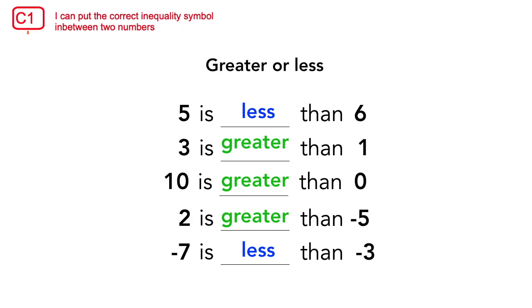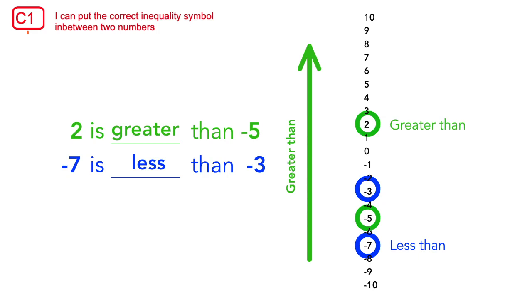Remember that on a number line, numbers in this direction are always larger than numbers in this direction. As we can see, negative 3 is higher than negative 7. So that's why negative 7 is less than negative 3.